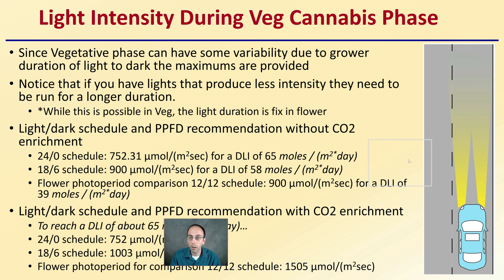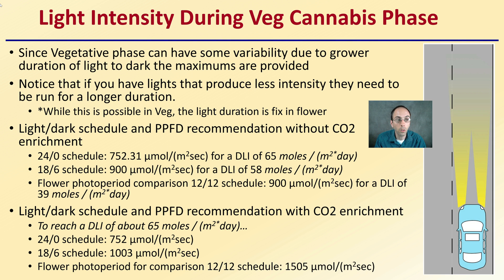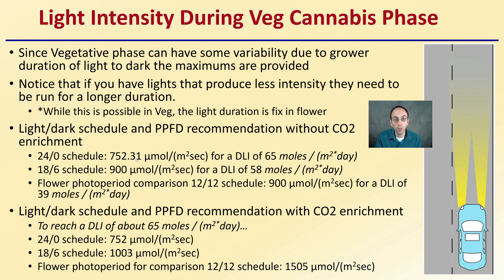Light intensity during the vegetative stage of cannabis production: since vegetative phases have variability in light-to-dark duration, maximums are provided. If your lights produce less intensity, they need to run for a longer duration — this is possible in veg, but light duration is fixed in flower. For example, running a 24-hour day to reach 65 moles per day requires at least 752 micromoles. An 18-6 schedule needs 900 micromoles, yielding approximately 58 moles per day. On a 12-hour flowering schedule at 900 micromoles, DLI drops to only 39 moles per day.